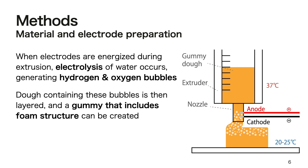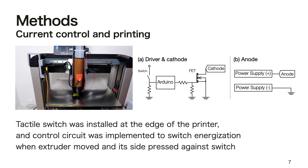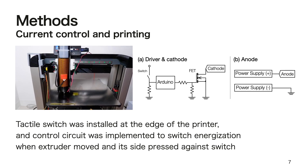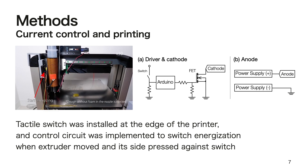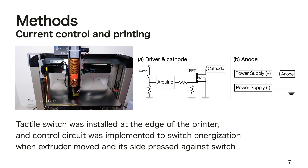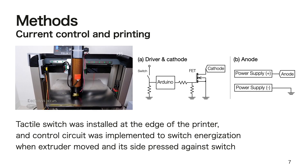It is finely layered, and the gummy that includes a foam structure can be created. To selectively generate foam in the printed object, a tactile switch was installed at the edge of the printer and a control circuit was implemented to switch the energization when the extruder moved and each side pressed against the switch.